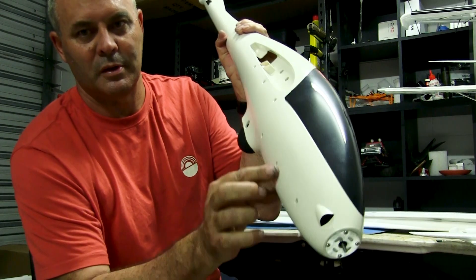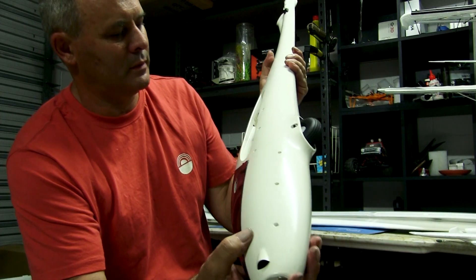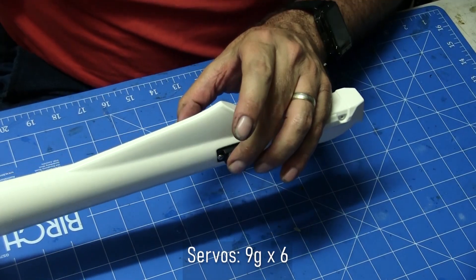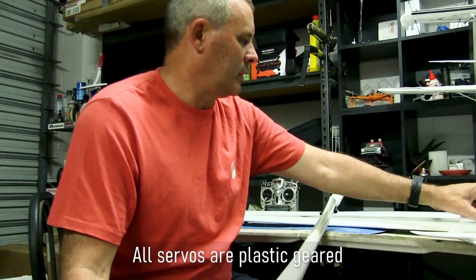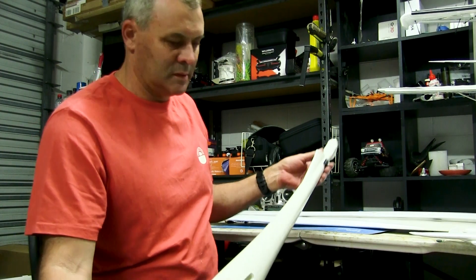So it looks like you can take it apart. We've got two servos here. I'm not sure whether they're metal or plastic. So the elevator is one piece, one servo, and the rudder is the other.